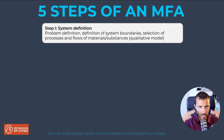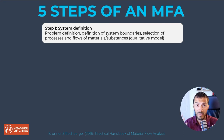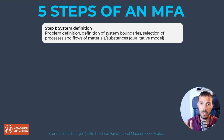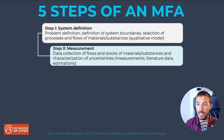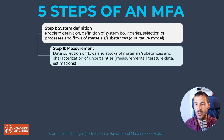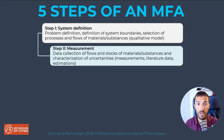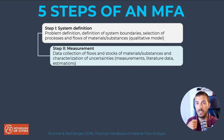So in the first step you define what you measure, what's included and excluded, for what year you're measuring, and at what spatial scale. The second step is the measurement of the flows. That means you start looking for data — collecting datasets, maps, whatever is available.